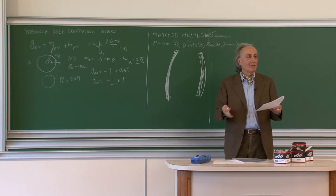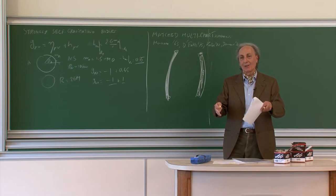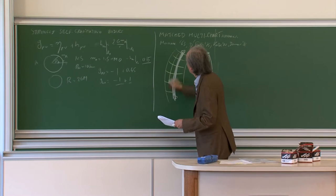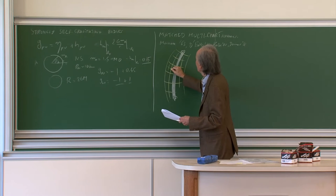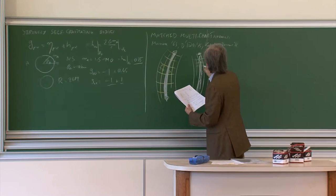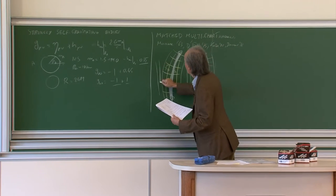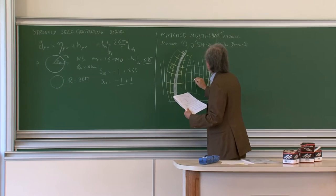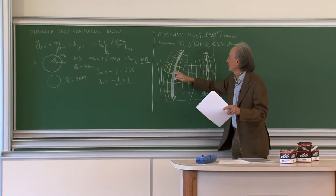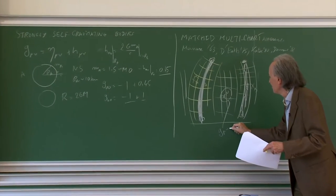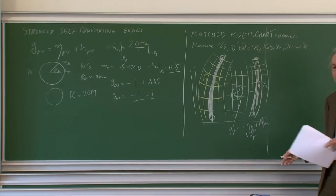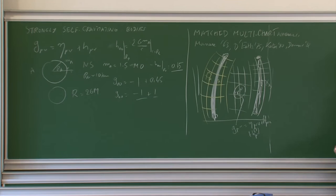Near object A you have a coordinate system X_A^alpha, and the same for B with X_B. In between and outside the two objects, you use a global coordinate chart X^mu, excluding what happens near the two bodies. In this global region you can use an expansion eta_mu_nu plus H_mu_nu at order one plus H_mu_nu at order two, because if you stay far from the objects H_mu_nu is small. When close to the objects, you use a different expansion — not flat space plus small perturbation, but instead the metric as a function of local coordinates equals the metric of an undisturbed object, like an undisturbed black hole or neutron star.